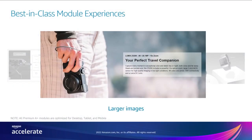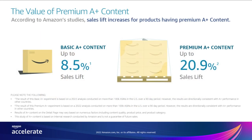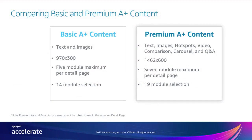Last but not least, premium A-plus modules are also bigger in size, giving you extra real estate to showcase your products and help customers in their purchase decisions. Studies have shown that adding high-quality premium A-plus can drive up to 20.9% sales lift, compared to 8.5% for basic A-plus. With premium, you can choose from 19 different modules compared to 14 for basic, and can include up to 7 modules per detail page compared to 5 for basic. Do note that premium goes through the same moderation process as basic, and in some cases it can take up to 7 days for premium A-plus content to appear on the detail page, so we always recommend to plan ahead.